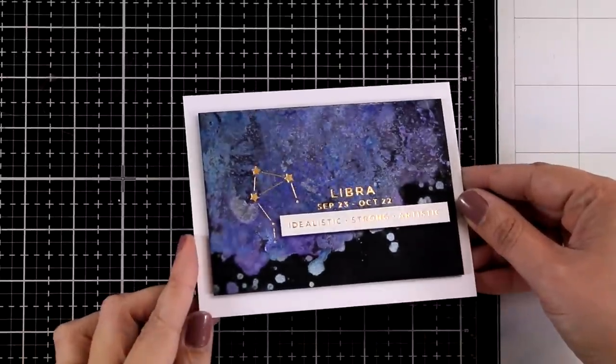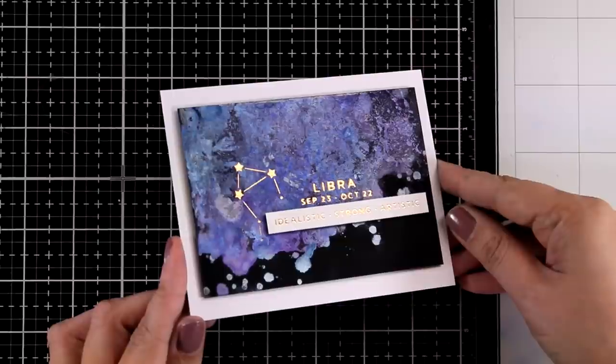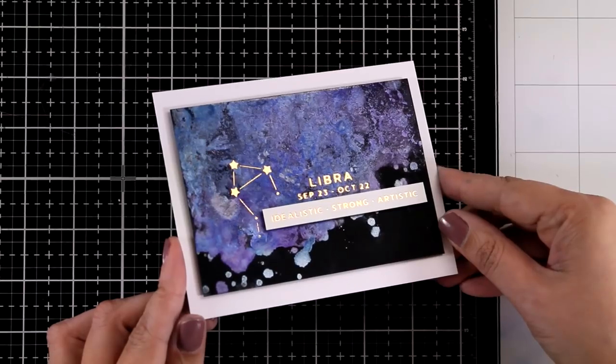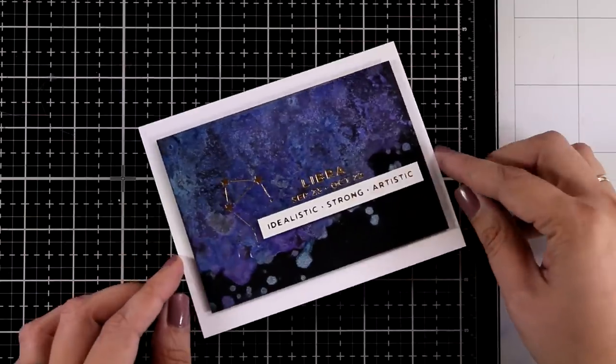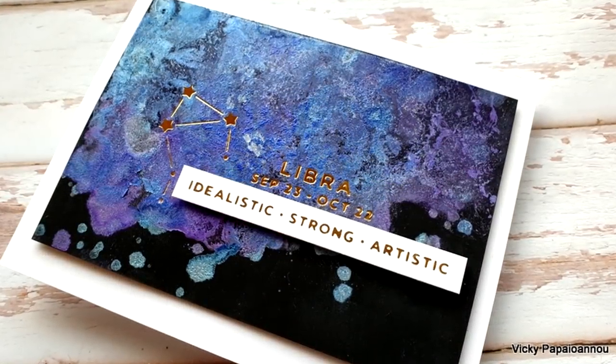I am going to place this panel on top of a standard card and I did finish it off with the foiled sentiment with the three words that describe my sign and I absolutely love that they include the word artistic. I think it matches perfectly with the background. Here are some close-up photos but in real life it's so stunning with that pearlescent background and the foil details on top.